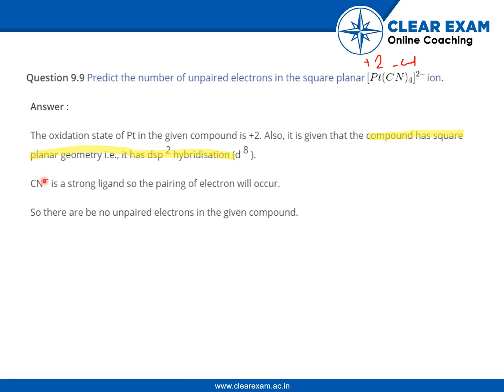Moving on, CN- is a strong field ligand, so the pairing of electrons will occur. Majorly, the ligands contributing C as a donor and N as a donor are known as strong field ligands.